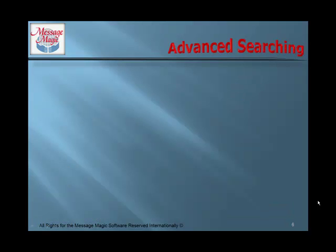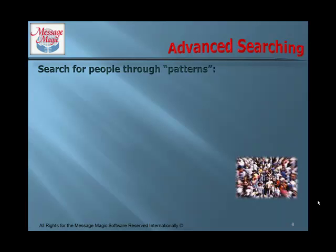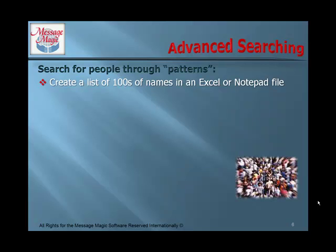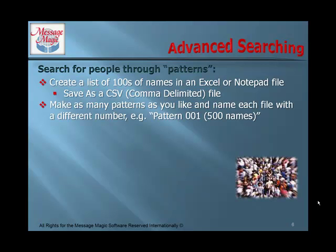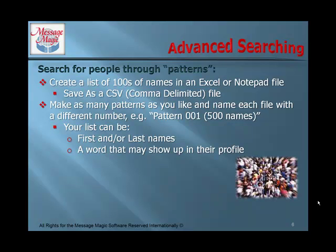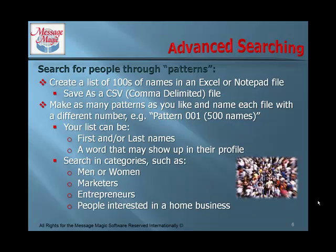Let's take a look at advanced searching. You can search for people through patterns. Create a list of hundreds of names in an Excel or Notepad file, and save it as a CSV comma-delimited file. Make as many patterns as you like and name each file with a different number — for example, Pattern 001 with 500 names. Your list can be first and/or last names, a word that may show up in their profile, or you can search in categories such as men or women, marketers, entrepreneurs, or people interested in a home business. Use your imagination.